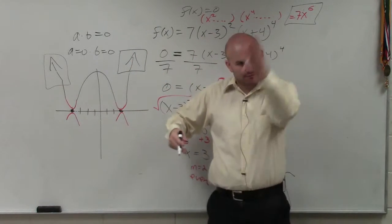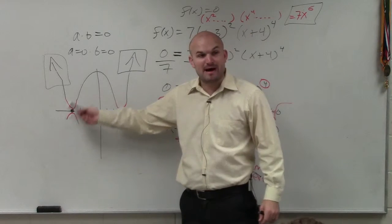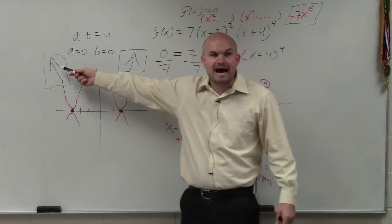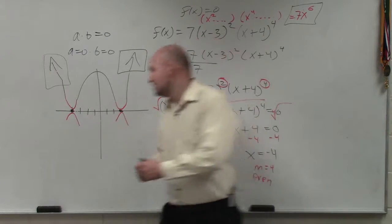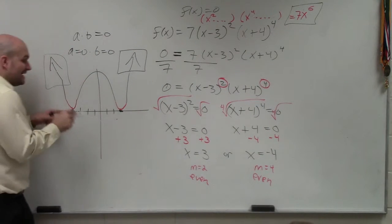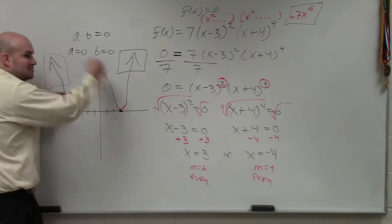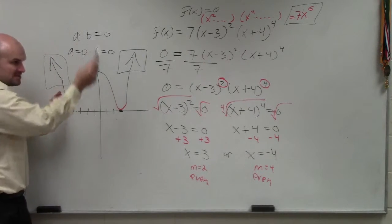That means it touches it and rebounds. So it either touches and rebounds up, or it's from the bottom. Well, obviously, we're coming from the top, so we can't go below. So I don't even need these. So anytime it's even, it bounces. That's why I did those two little red u's. It touches the zero and bounces back up.